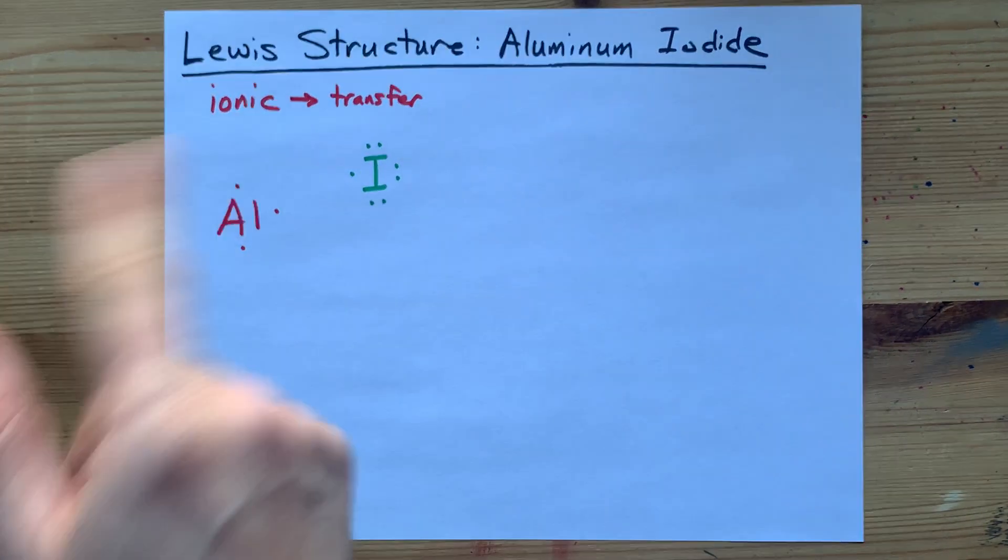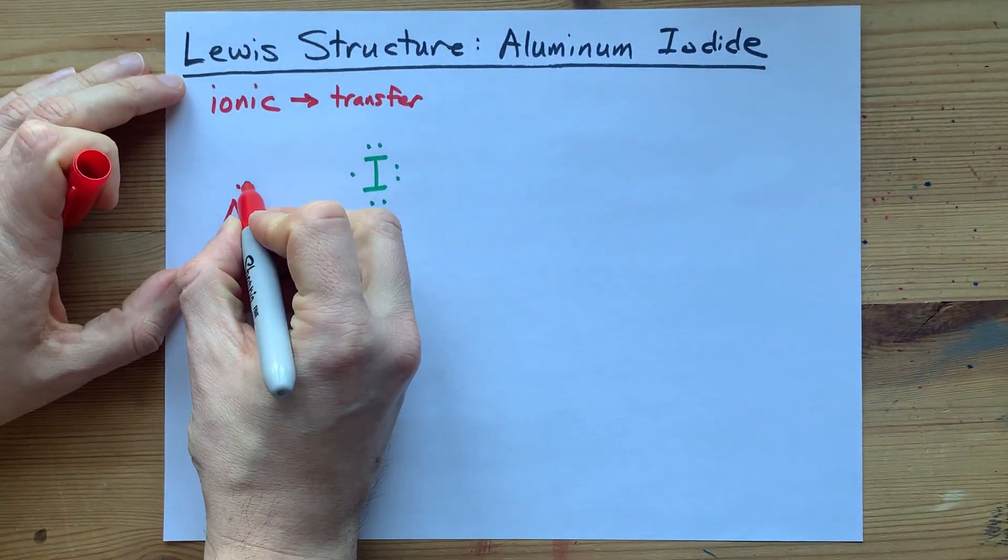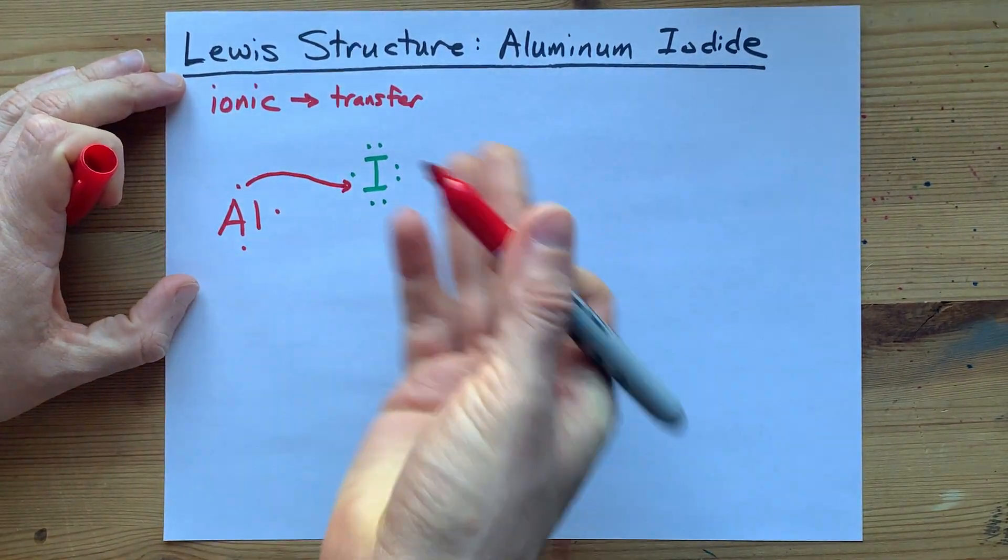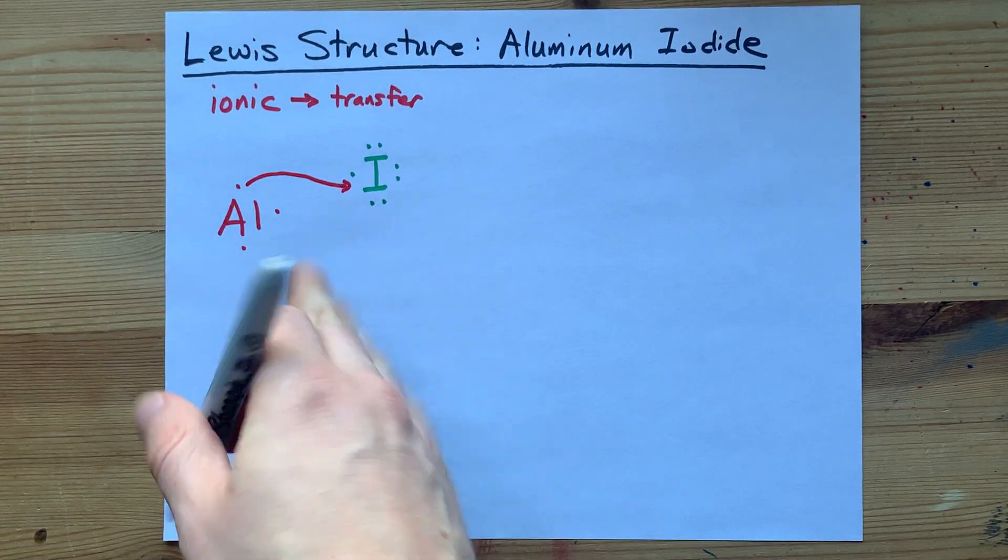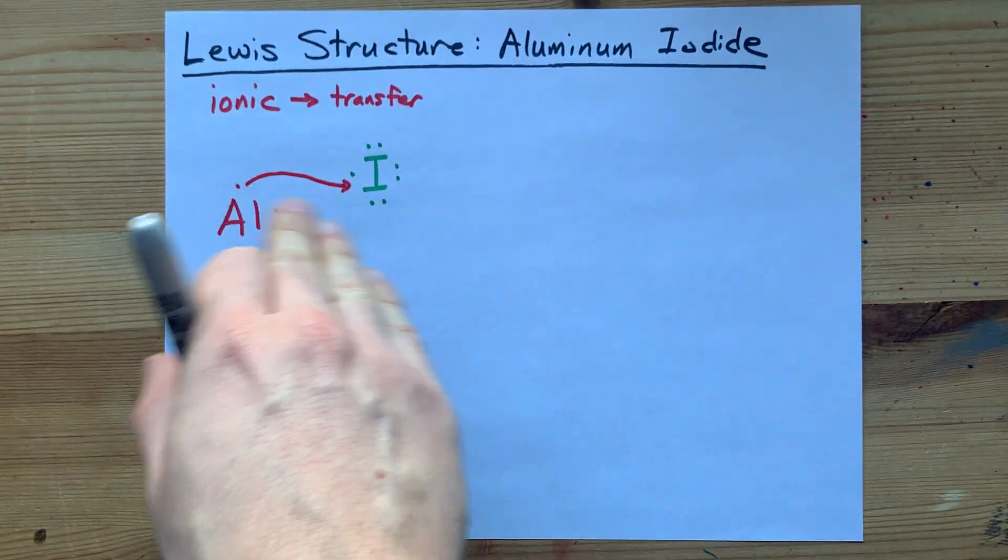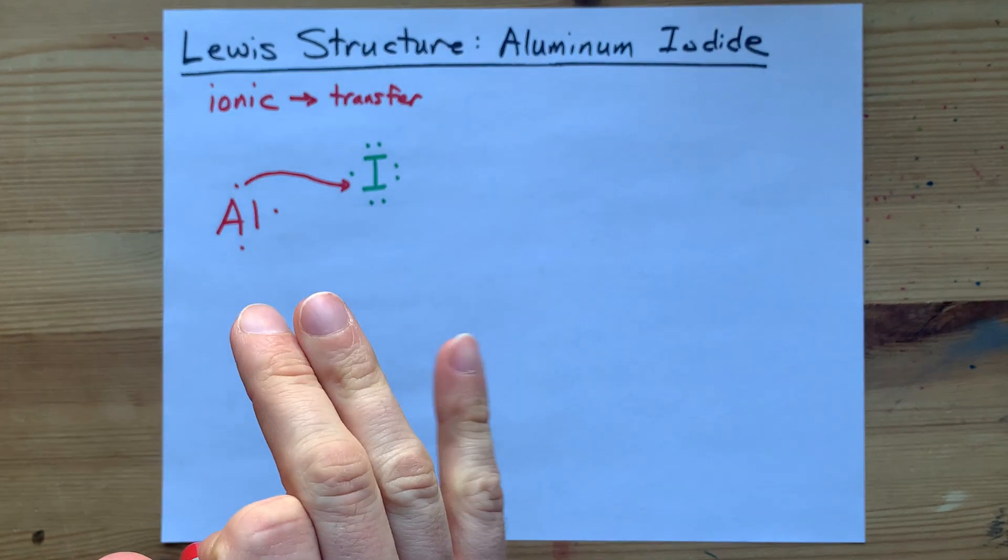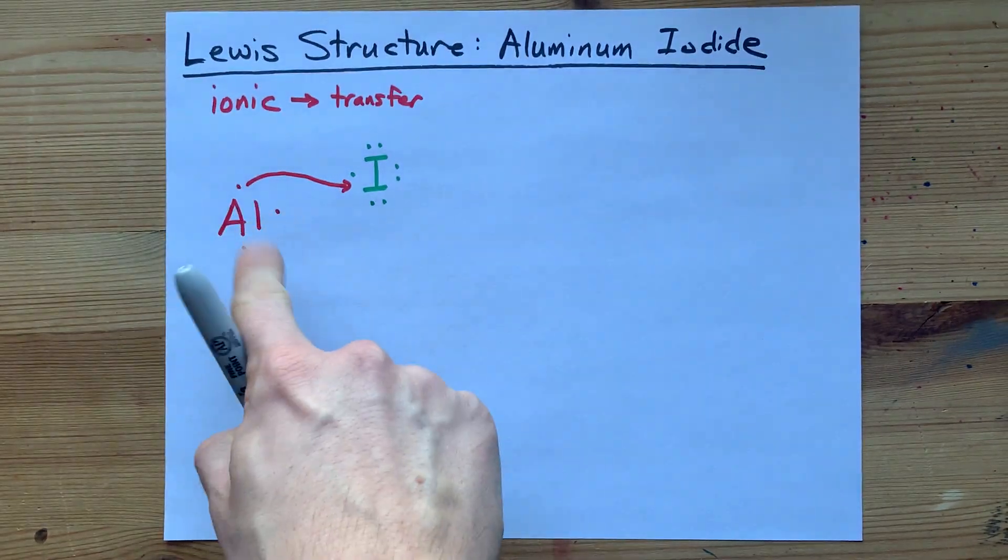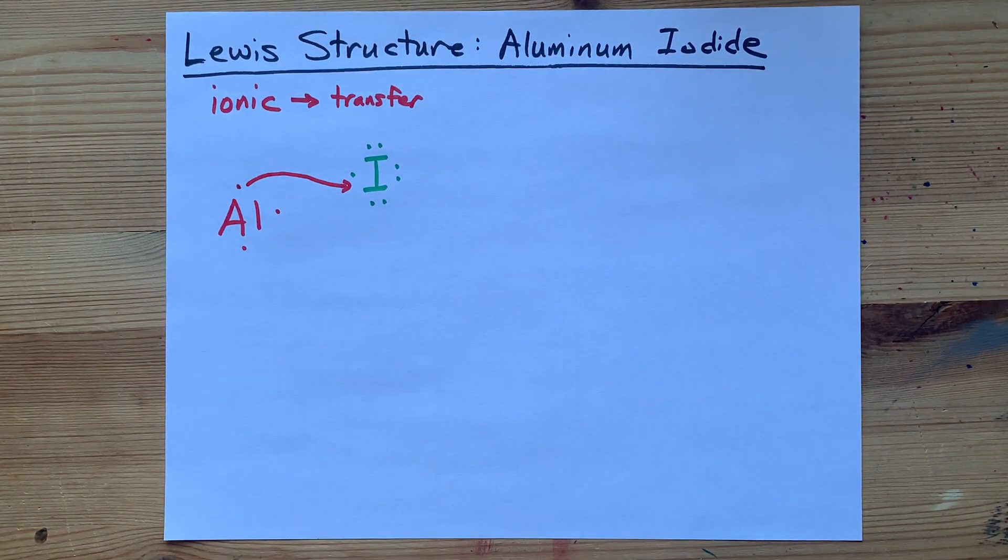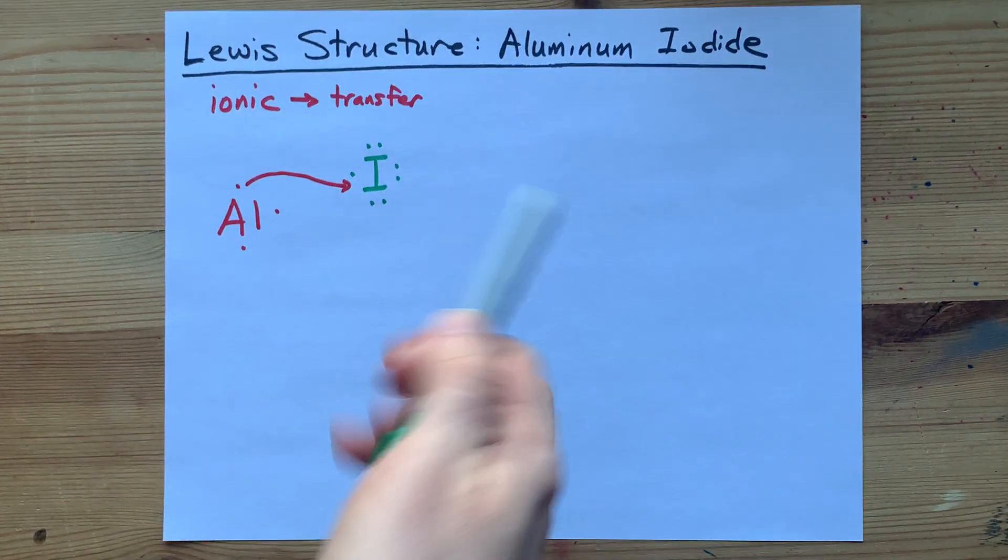Hmm, aluminum can give one away. There you go. That's great. Now, the iodine is stable. It has seven plus one equals eight electrons. But aluminum still has two electrons left over. Where can it put those?